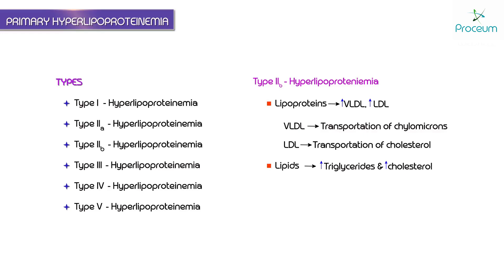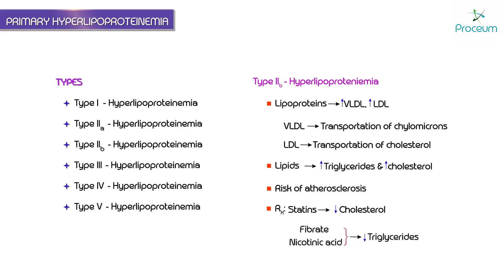In type 2b, both triglycerides and cholesterol are increased, so there is a risk of atherosclerosis. The treatment requires statins for reducing cholesterol, fibrates for reducing triglycerides, and nicotinic acid is also required.